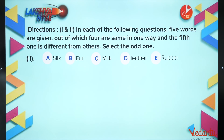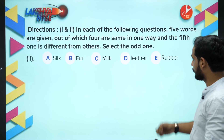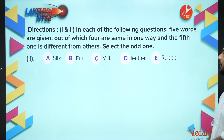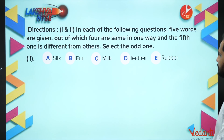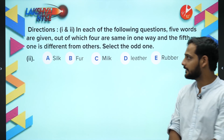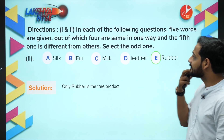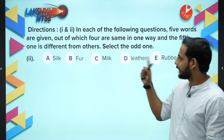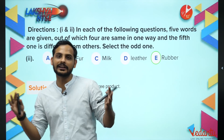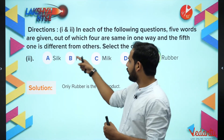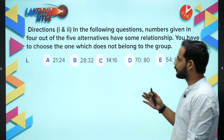Next: Silk, Fur, Milk, Leather, Rubber - which is the odd one? Fur, leather, and milk all come from animals. Silk comes from the silkworm - so also from an animal. But rubber comes from a tree. So rubber is the odd one out, as all others are products obtained from animals.